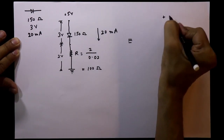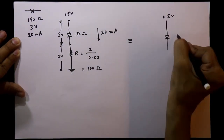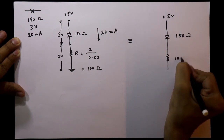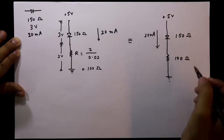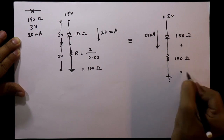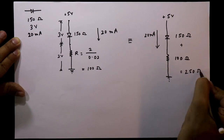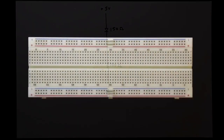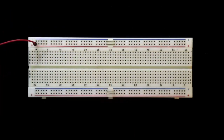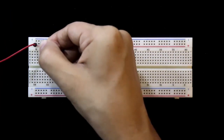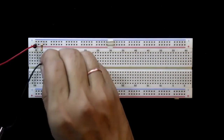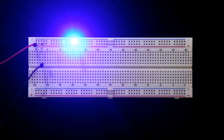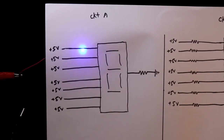The final circuit: power supply is 5 volts, LED internal resistance is 150 ohms, series resistor is 100 ohms, current is 20 milliamperes, and total resistance is 150 + 100 = 250 ohms. In the practical circuit, positive is connected to the positive rail, a 100-ohm resistor connects to the negative rail, and the LED is connected — it glows at 5 volts with the 100-ohm resistor.